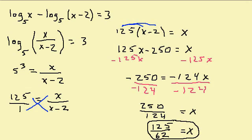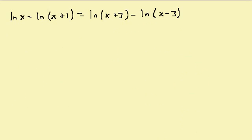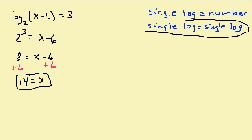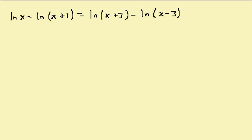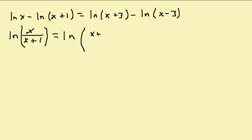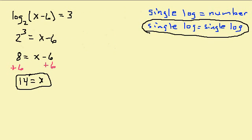Let's take a look at one more problem. In this problem I have two logs on the left hand side and two logs on the right hand side, so I'm going to get it in the form of a single log equals a single log. I can write the left hand side as a single log and the right hand side as a single log. Subtraction comes together as division, so that's the natural log of x over (x plus 1) equals the natural log of (x plus 3) over (x minus 3).